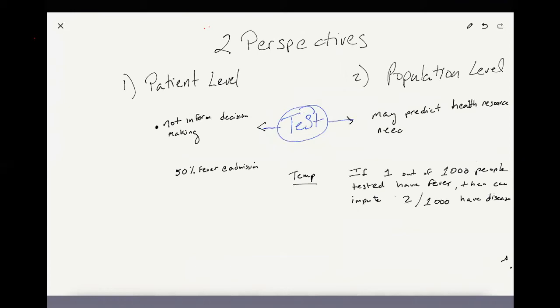That's a very different perspective than at the population level. At the population level where we're doing surveillance, the test is being used to predict health resource needs. It's being used to predict what the burden of disease is, how much of the workforce is going to be affected by this disease being present. Those larger population questions through surveillance are being asked. It's a completely different perspective.